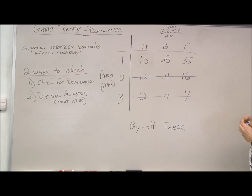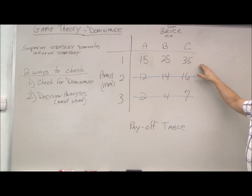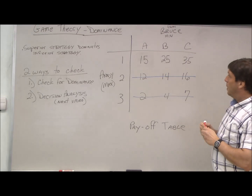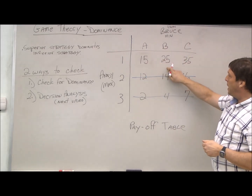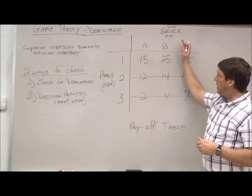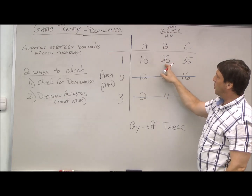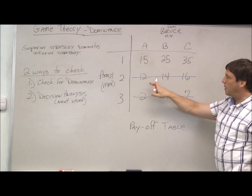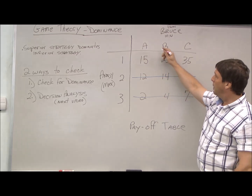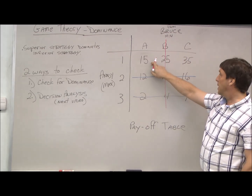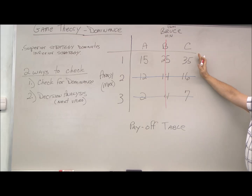If we look at Bruce and his options, we've already taken strategies two and three off the table, so we're just looking at strategy one. Bruce is the minimizer — he wants to pay Andy the least amount he can. Can we compare strategies A and B? Even if those numbers weren't crossed out, A is a superior strategy because 25 is greater than 15, 14 is greater than 12, and 4 is greater than 2. So he will never choose B — he will always choose A because it's the least payout. We can go on and do the same thing for C.